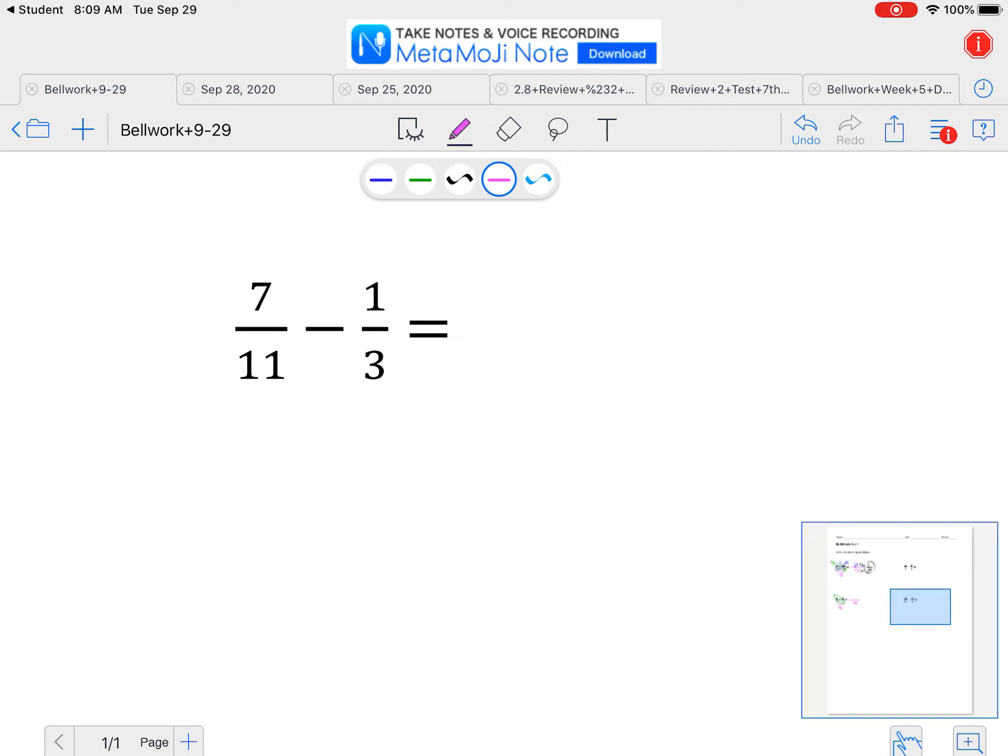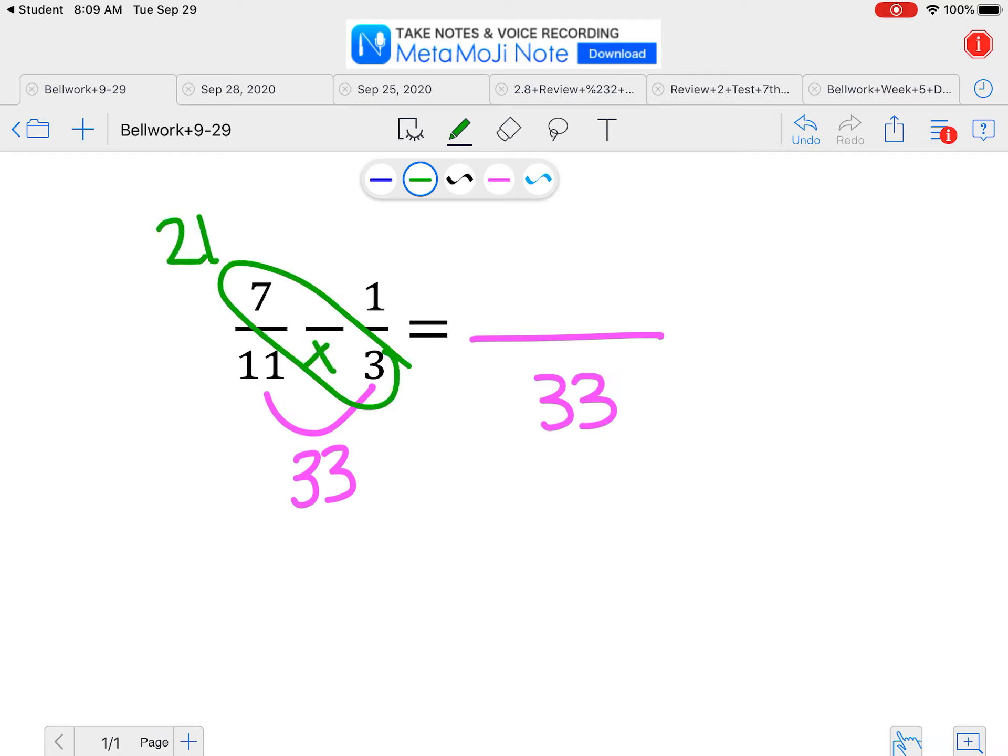Then the last one, the denominators again are not the same, so multiply those together to get a common denominator. And we need to do the same to our numerators. So 7 times 3 is 21, and 11 times 1 is 11. Again, this was a subtract problem, so 21 minus 11 is 10. And that would be your final answer.